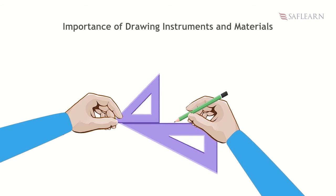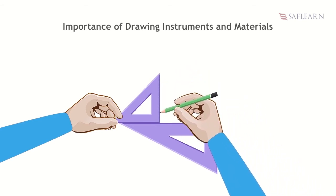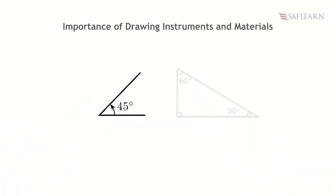Set squares are used to draw parallel lines, perpendicular lines, etc., depending on the need of the user. The different categories of set squares include 45 degrees, 60 degrees, or 30 degrees set squares.